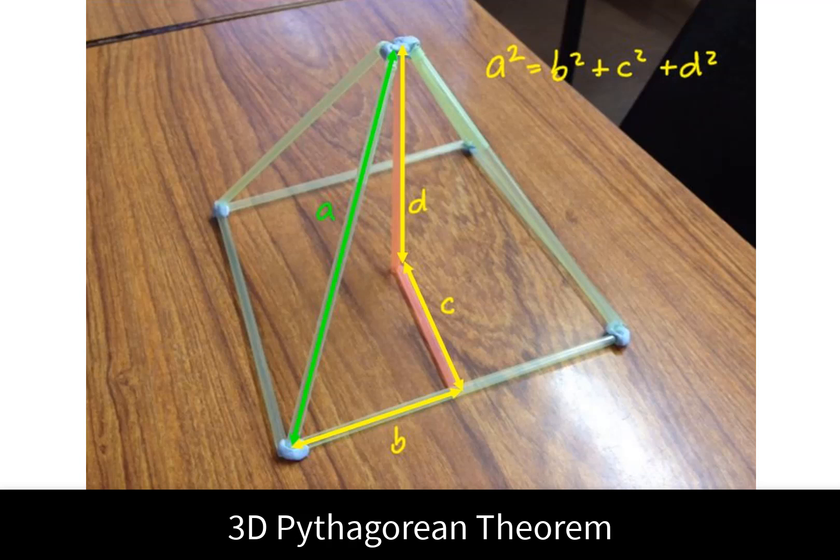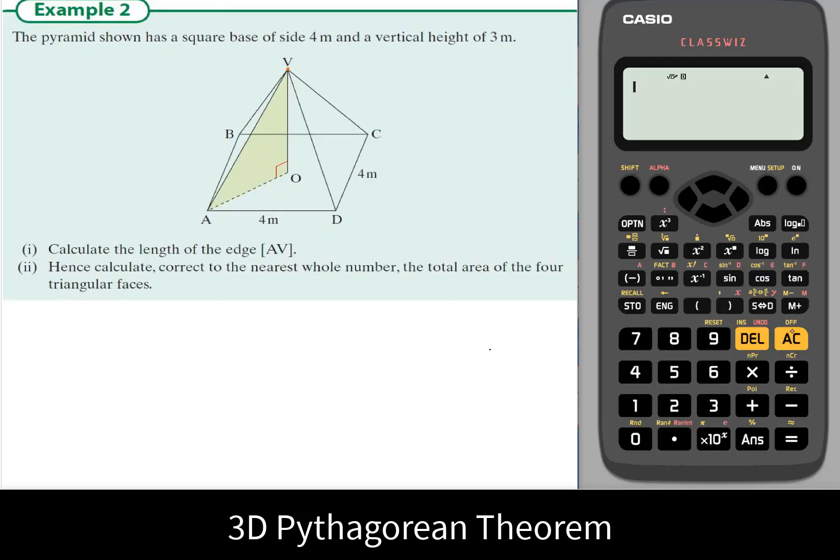Here we have a problem that's using three-dimensional trigonometry. We're going to learn that Pythagoras' theorem actually works in three dimensions. So we have a pyramid, and we've been asked to find the slant height AV of this pyramid colored in orange here.